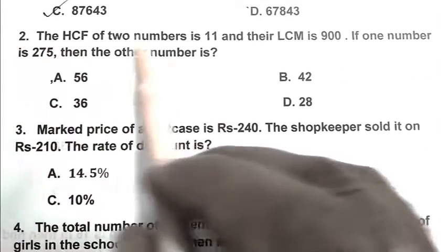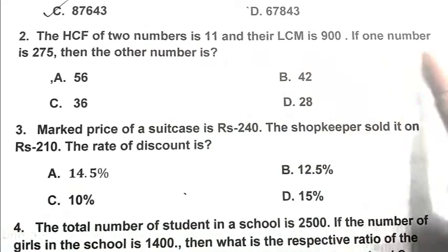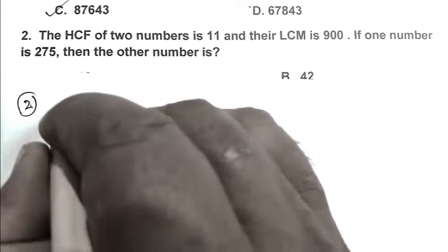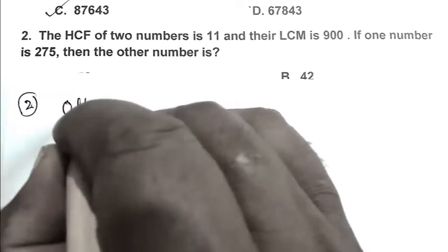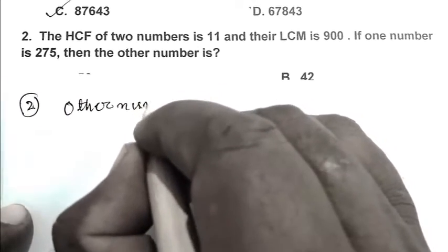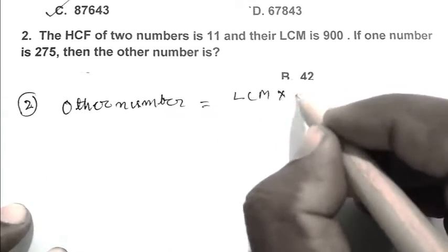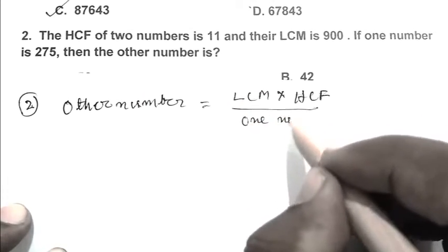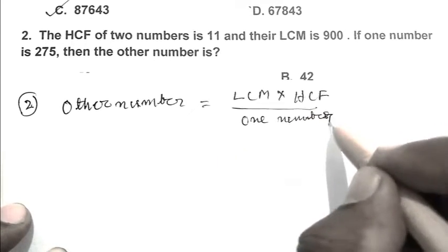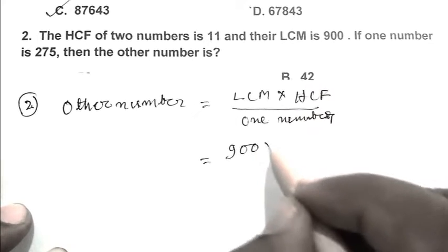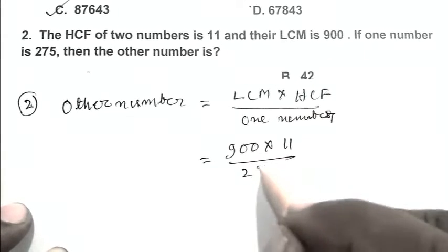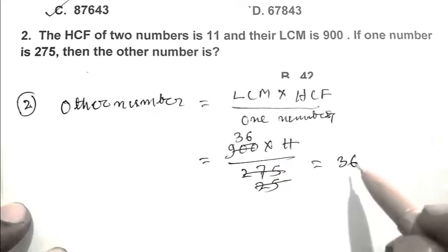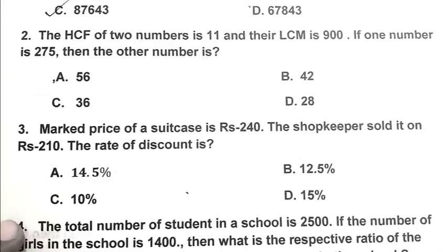Question number 2: The HCF of two numbers is 11 and their LCM is 900. If one number is 275, then the other number is? So friends, we have to calculate it from the formula: other number equals LCM multiplied by HCF upon one number. So friends, LCM that is 900, HCF 11 upon 275 equals 36. So friends, the other number is 36. C is the right answer.